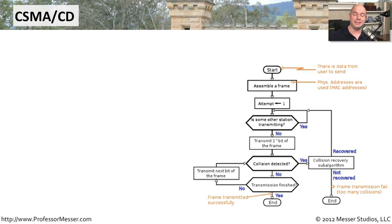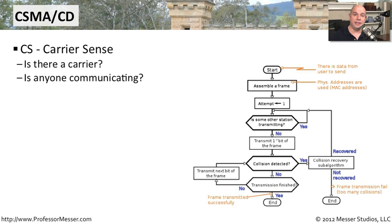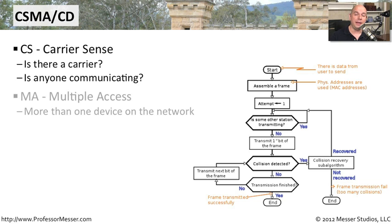Let's start with CSMA-CD. The CS in CSMA stands for Carrier Sense, which means the device communicating on the network is listening to determine if someone else is transmitting. If there is someone else transmitting, we're not going to transmit over them — that's the Carrier Sense part. The MA piece means Multiple Access, so there are many different devices on the network all trying to communicate together using CSMA.